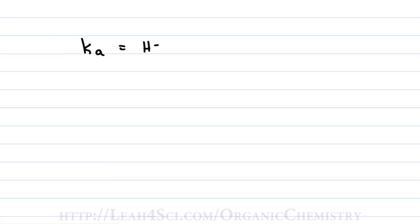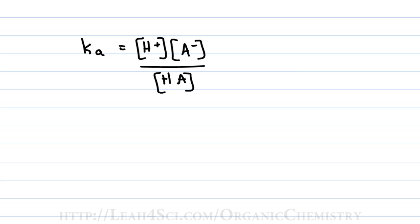In order to understand the logic, we first have to review the math — not for the sake of doing it, just for the sake of understanding. In Gen Chem, you learned that the acid dissociation constant Ka is equal to the H+ concentration — you can also see this written as H3O+, same thing because water will pick up a free proton in solution — times A minus, the conjugate base, divided by the concentration of the initial acid HA.